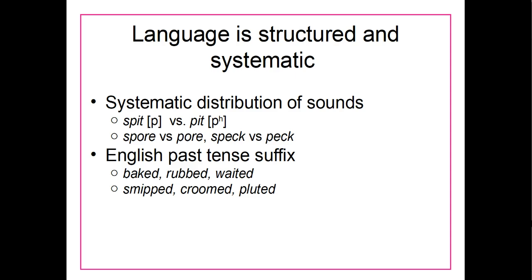As we'll see in a future set of lectures, the two words 'spit' and 'pit' actually have two different forms of the sound represented by the letter P in English. The P sound in 'spit' does not have a little puff of air after it that the P sound in 'pit' does. If you hold your hand in front of your mouth and say 'spit' and then 'pit,' you may notice a little puff of air when you say 'pit.' There's a reason for that, which we'll look at in future weeks. Basically, the sounds in English do have a kind of systematic distribution.